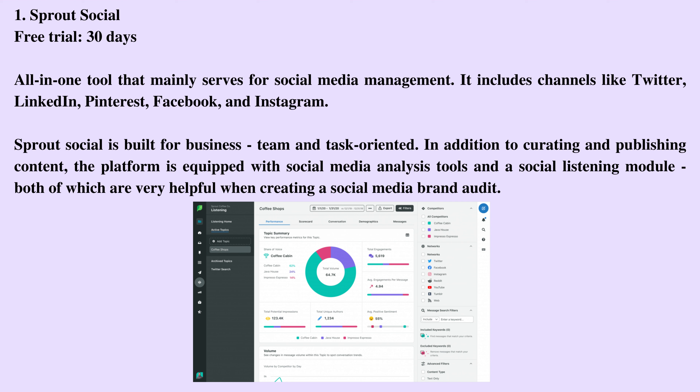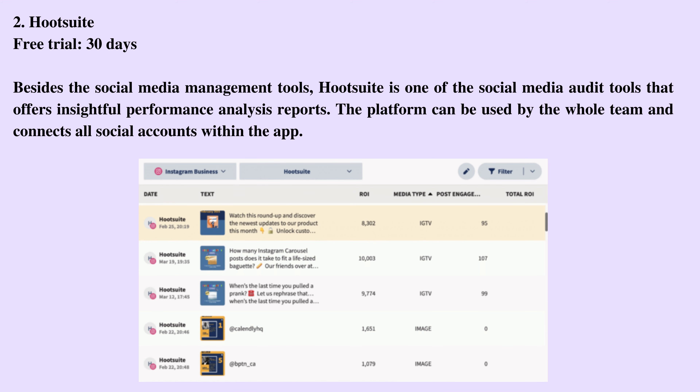1. Sprout Social — free trial, 30 days. Sprout Social is an all-in-one tool that mainly serves for social media management. It includes channels like Twitter, LinkedIn, Pinterest, Facebook, and Instagram. Sprout Social is built for business teams and is task-oriented. In addition to curating and publishing content, the platform is equipped with social media analysis tools and a social listening module, both of which are very helpful when creating a social media brand audit.